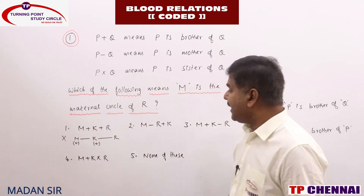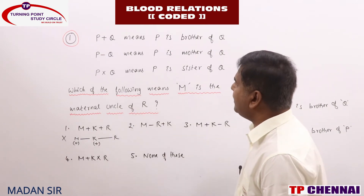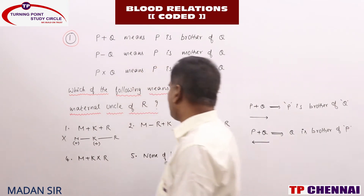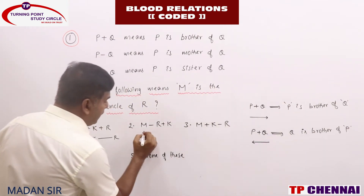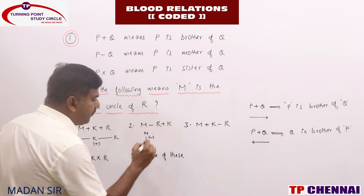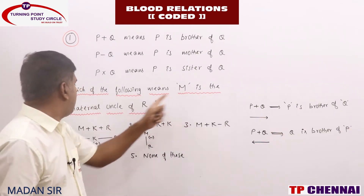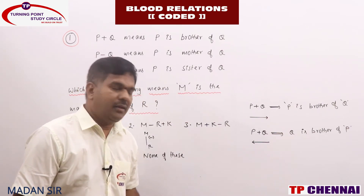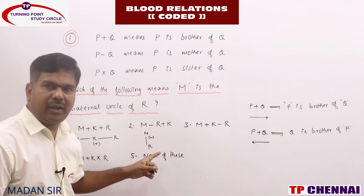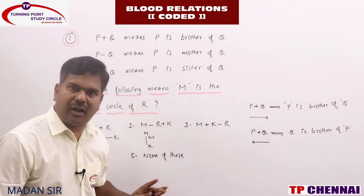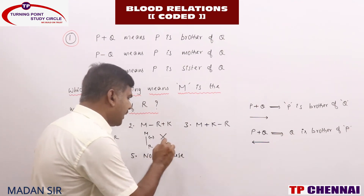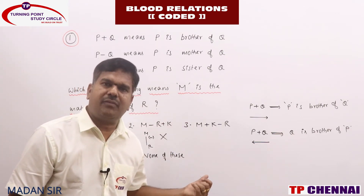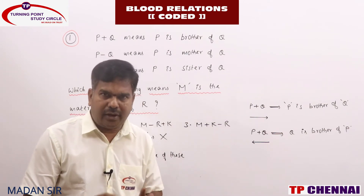Second option: M minus R plus K. M minus R means P minus Q is P is mother of Q, so M is mother of R. But we need M as maternal uncle — M must be male. Here M is female. Is there any need to construct a family tree? Not required. Gender differs, so straight away eliminated.